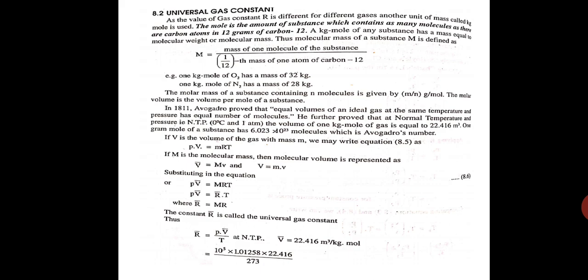So the molar mass of a substance containing N molecules is given by M divided by N, grams per mole. There are two terms: grams per mole or kg per mole. The molar volume is a volume per mole of a substance. So the volume occupied by a mole of a substance is known as the molar volume.